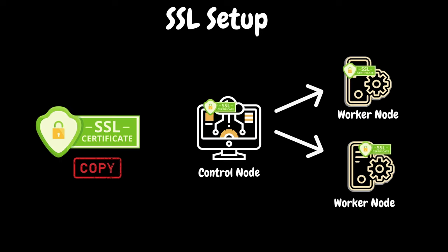Finally, we need to copy this JKS file to the JMeter bin folder in all worker nodes. We have an option to skip this SSL setup process by updating the server.rmi.ssl.disable property under JMeter properties. By default, this property is set to false, which means we need to set up SSL.